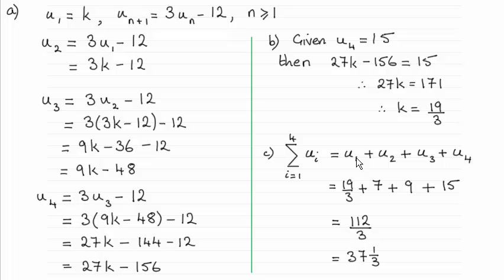Then all I've done is I've substituted k into u1 and got that u1 was 19 thirds. Substituted k into u2 here and that came out to be 7. Then into here it turned out to be 9, and into here turned out to be 15.